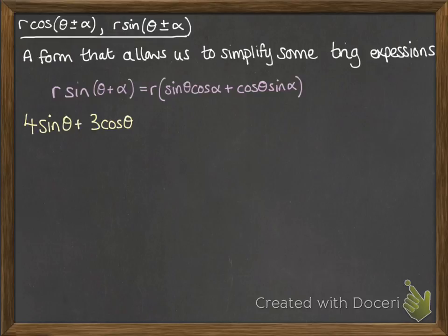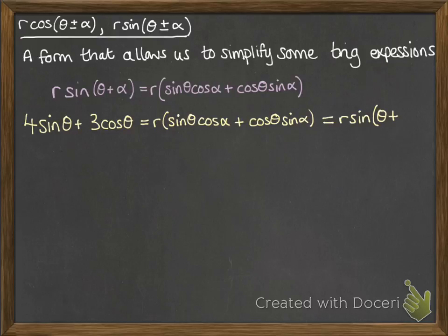Now if we try this with an actual one, you might be able to see a little better of how this actually works. So 4 sine theta plus 3 cos theta, we're going to convert it into the r sine theta plus alpha form. So we know that that's the same as this, r brackets sine theta cos alpha plus cos theta sine alpha. And that would be the same as putting it into r sine theta plus alpha from that result that we've got just above it in the purple.